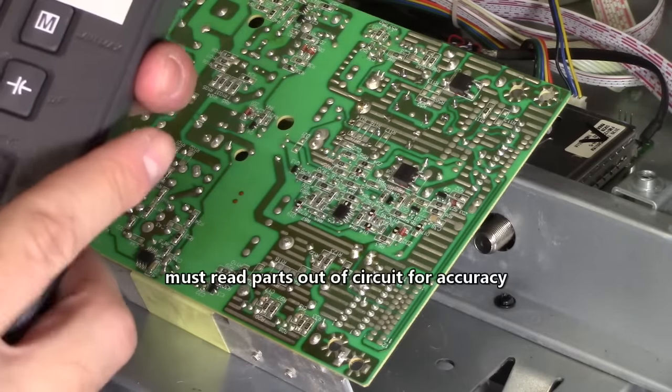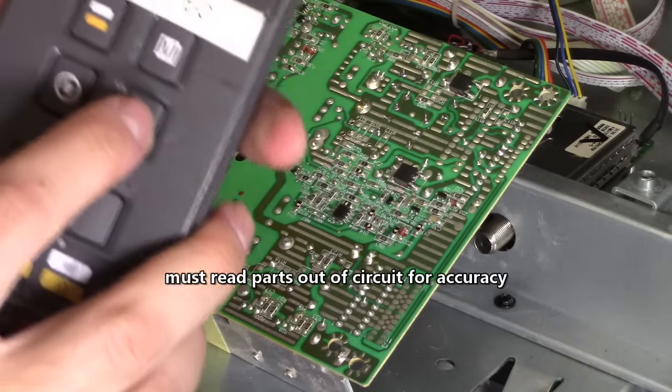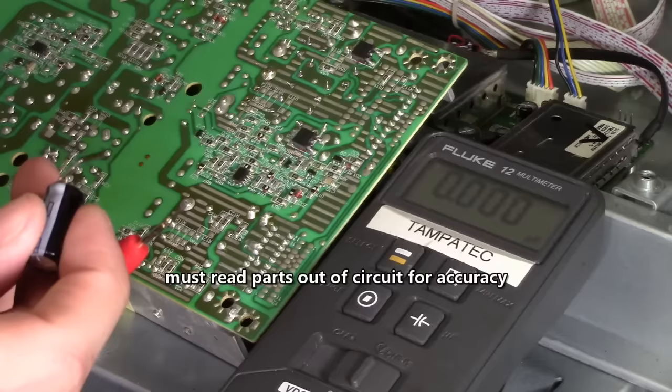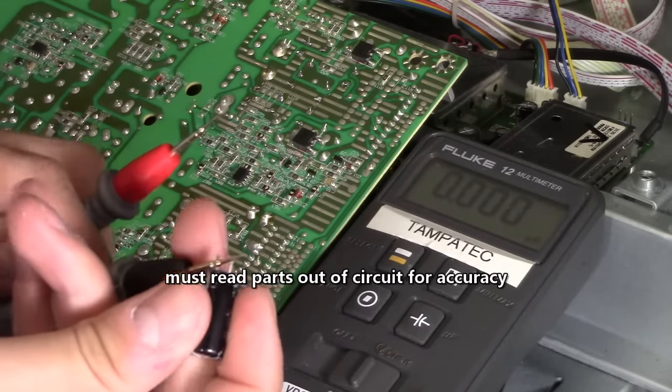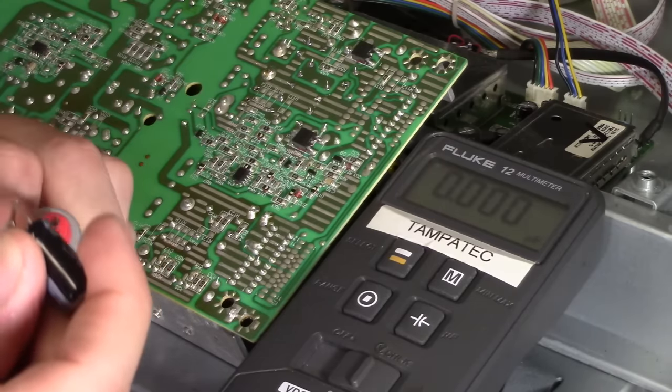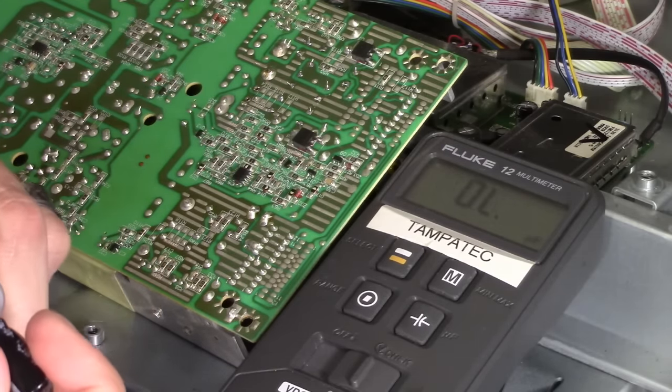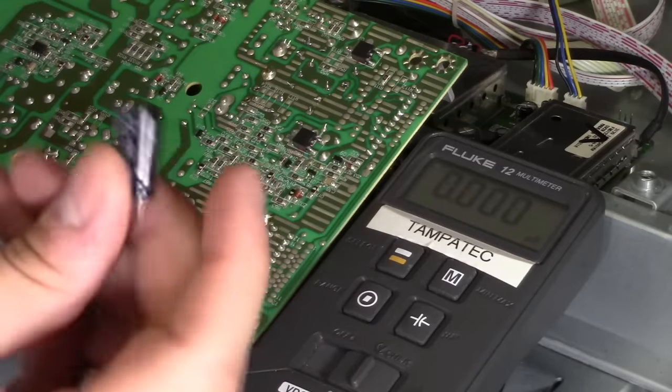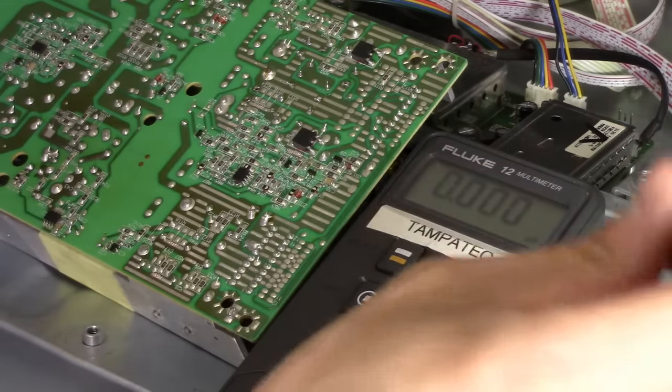So I'm going to put my meter in capacitor mode and I'll show you what it reads. Microfarads. I'll put my black lead on the striped side. And I put my red lead on the other side. And see, look, it's reading 17 microfarads and it should be reading 1,000. It's definitely bad.